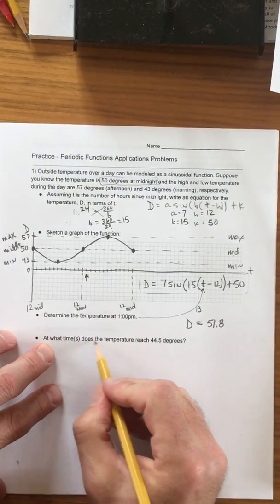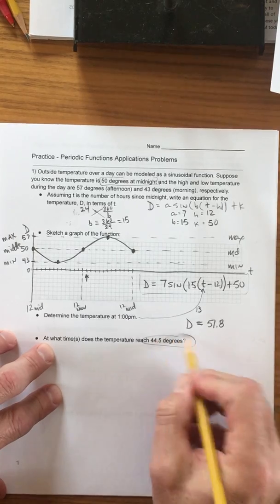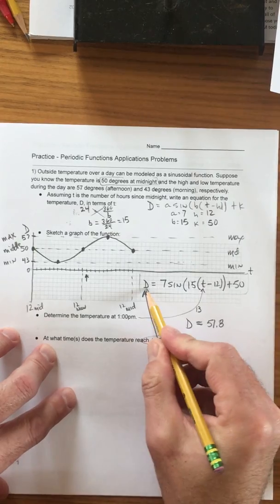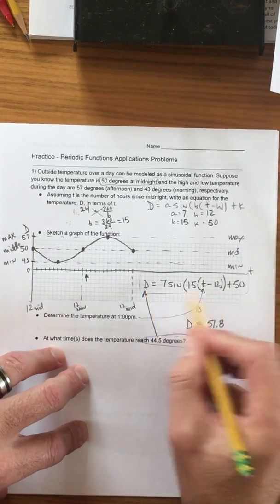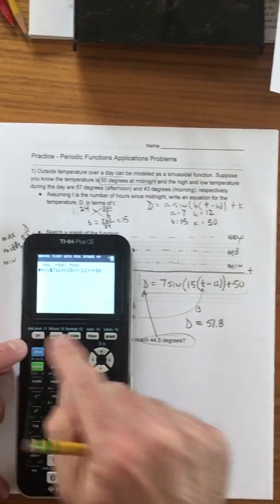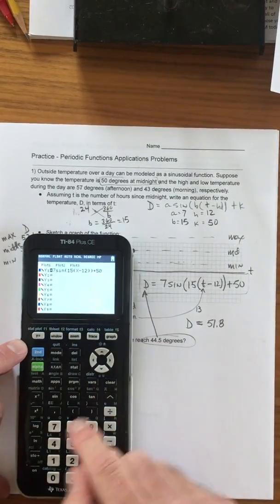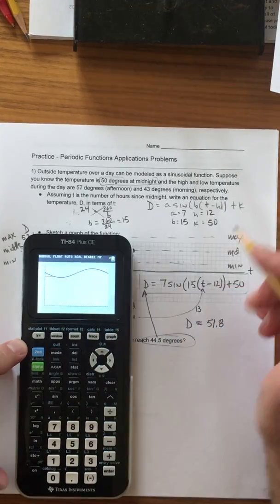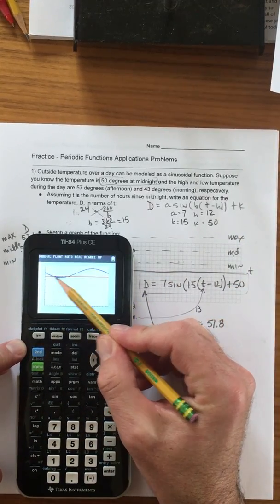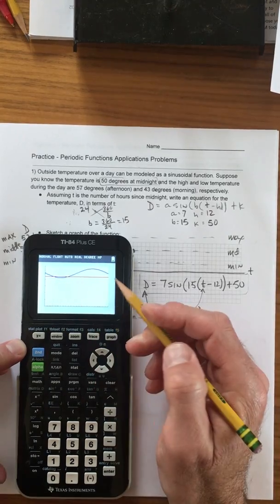This one says, at what times does the temperature reach 44.5? So in this case, we're putting 44.5 in here and solving for T. And the easy way to do that is to go to y equals and put 44.5. And you can see there are two times a day where they intersect, and that's when it's 45.